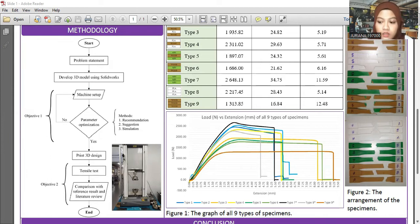After machine setup and parameter optimization, we print the 3D specimen. If the parameters are correct, we can print; if not, we must set up again. Then we move to tensile testing, and finally, comparison with reference results and literature review. Moving to results and discussion.